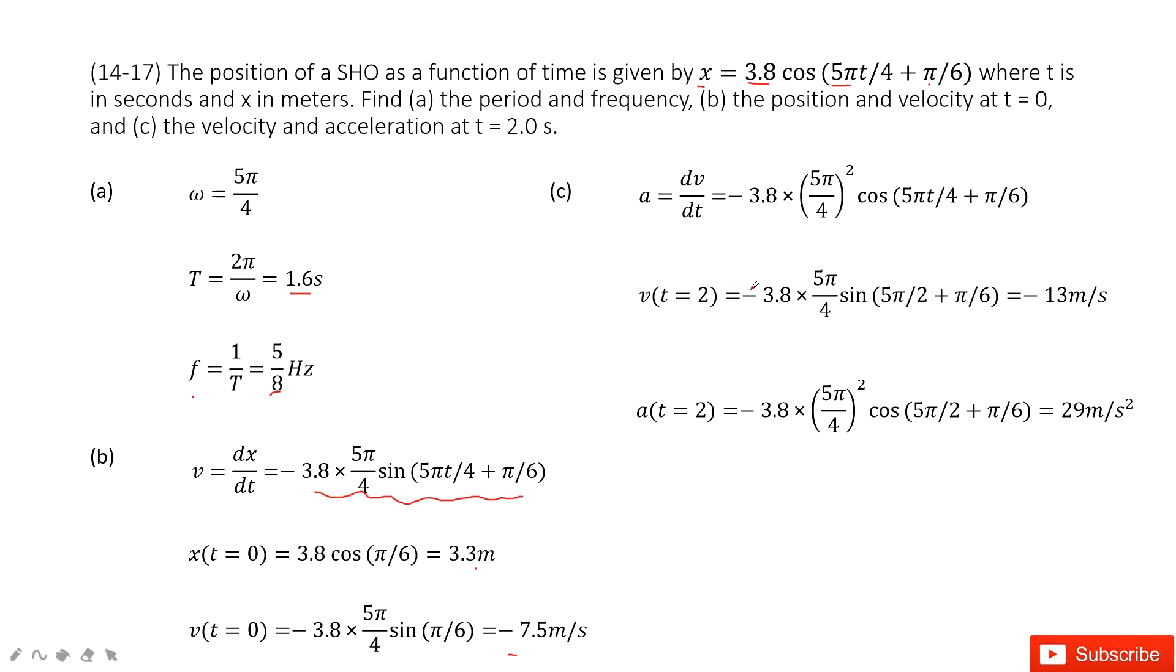Next, we need to find the velocity and acceleration at t = 2. We already have the function for v with respect to t. The acceleration is the derivative of v with respect to t. We take the derivative of the velocity function to get the acceleration function.